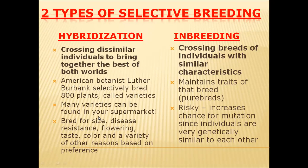Many of these varieties can be seen in our supermarkets and are used on a daily basis. Burbank bred for different types of sizes, disease resistance, flowering, taste, color, and a variety of other traits, developing 800 different varieties of plants.